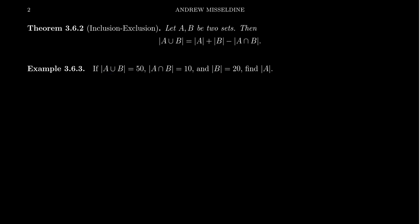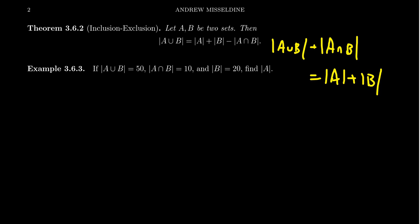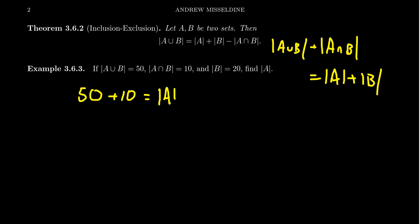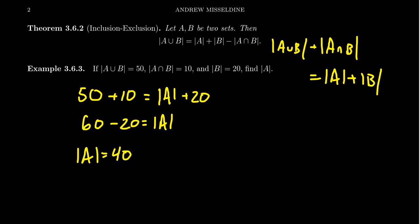Some people like to rewrite this formula by moving the intersection to the other side: |A∪B| + |A∩B| = |A| + |B|. There's a nice symmetry — if you add together A and B, that's the same as adding together their union and intersection. If you know three of these numbers, you can solve for the fourth. For example, if the union is 50, the intersection is 10, and |B| = 20, then 50 + 10 = |A| + 20, giving |A| = 40.